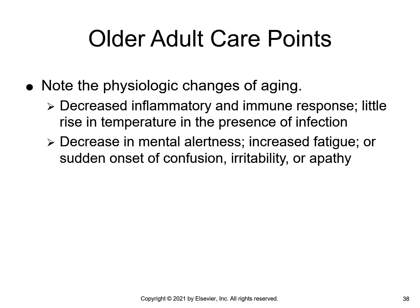Older adults, especially those older than 80, have a very low baseline body temperature. Because of their decreased inflammatory and immune response, their temperature may only rise a slight amount in the presence of an infection — so any small increase in temperature could be extremely significant. Signs of inflammation may be absent or milder than in younger individuals. A decrease in mental alertness, increased fatigue, or a sudden onset of confusion, irritability, or apathy could be a clue that an infection is present.